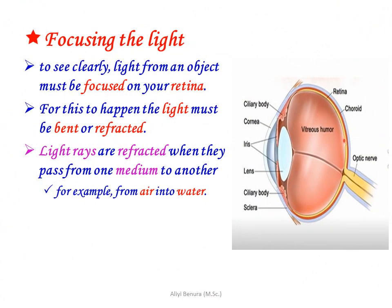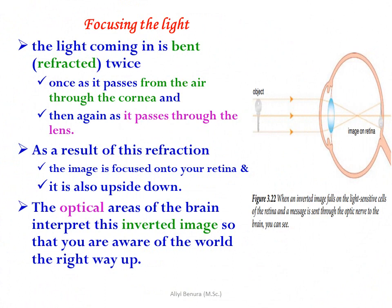Focusing the light: to see clearly, light from an object must be focused on your retina. For this to happen, the light must be bent or refracted. Light rays are refracted when they pass from one medium to another, for example from air into water. The light coming in is bent or refracted twice — once as it passes from air through the cornea, and then again as it passes through the lens.